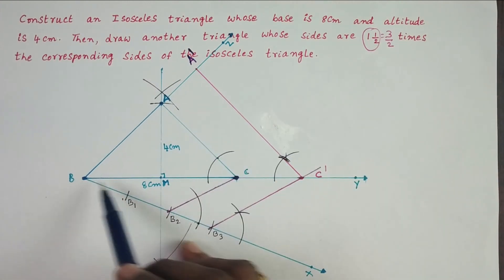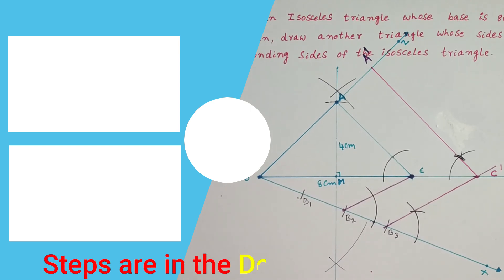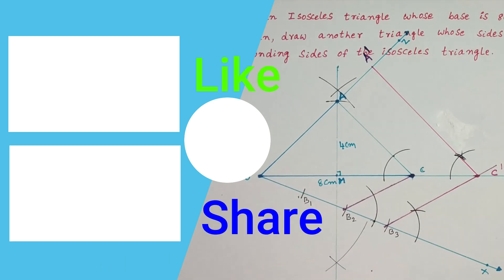Now the required triangle A'BC' is constructed. The steps of construction are given in the description. Keep following it. If you like the video, share it. Thank you for watching.